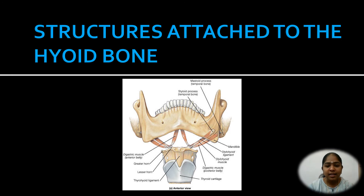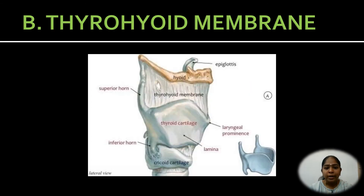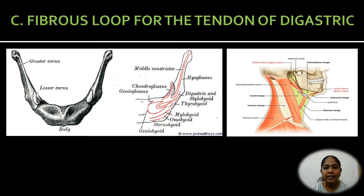Other structures attached to the hyoid bone: the stylohyoid ligament is attached to the apex of the lesser cornua, forming the base of the skull. The thyrohyoid membrane is attached to the medial border of the greater cornua and the upper border of the body. A fibrous loop for the tendon of the digastric is attached to the lateral part of the upper surface of the greater cornua, behind the insertion of the stylohyoid muscle.